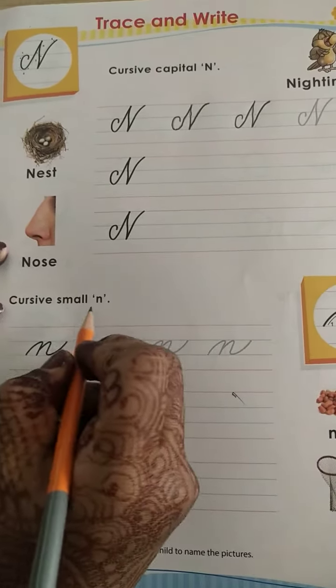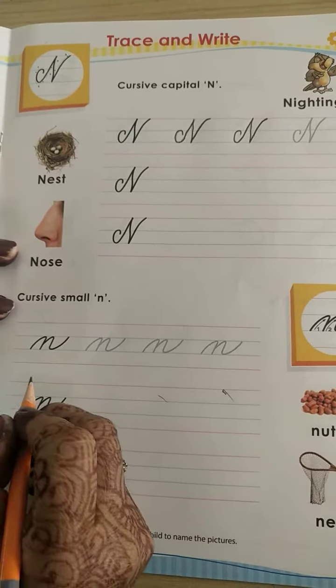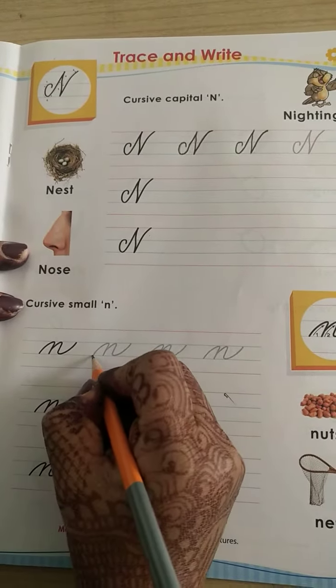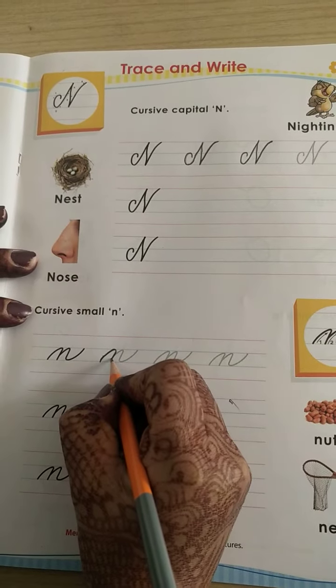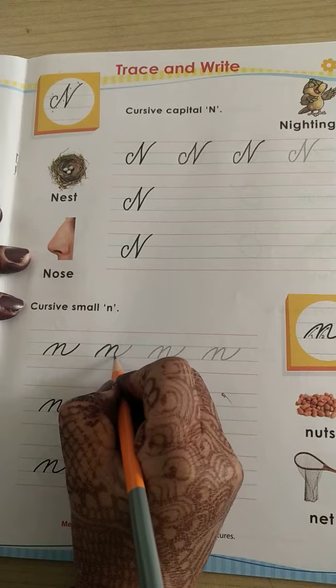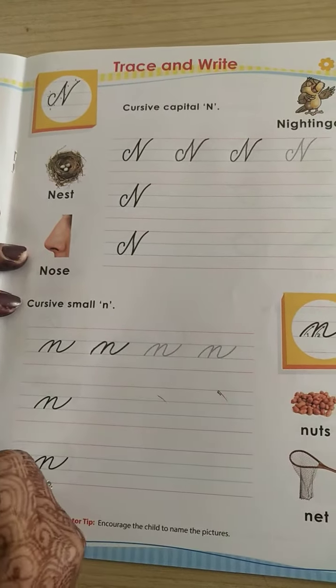Now, how to write cursive small n. We have to start from this third line. Go up, make a curve, come down, go up again, come down with a curve, and finish it like this.